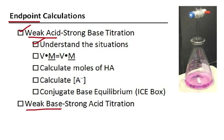Next, we want to find out how much base we need to neutralize the acid. From there, we're going to calculate the moles of the acid that we started with, and that's also going to give us the moles of the conjugate base that we form. We'll calculate the concentration of the conjugate base and then do an ICE box to figure out the pH. Last, I'd like to do another one from the other way around, where we have a weak base titrating with a strong acid.